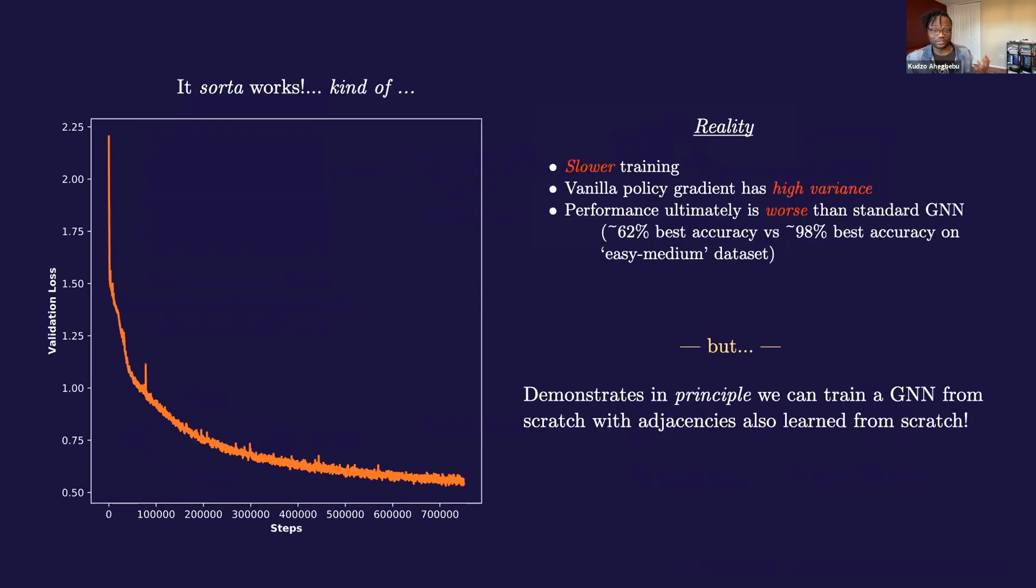Cool. Okay. So if you try this out, it works, kind of. The reality is that this trains much slower than the standard GNN. And, you know, vanilla policy gradients are high variance, they're kind of messy. But, and the performance actually is worse than the standard GNN, but it does show that in principle, we could train a GNN from scratch that learns the adjacencies from scratch as well, which is kind of cool.